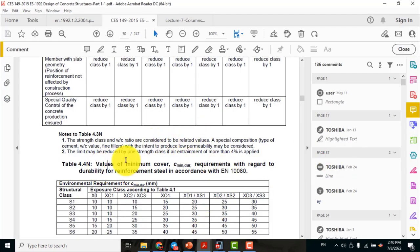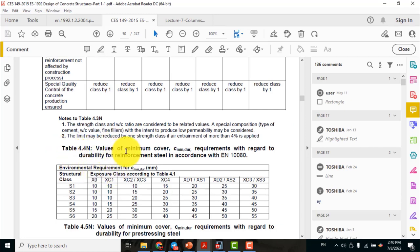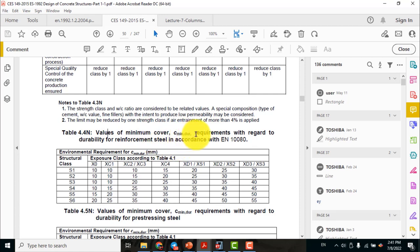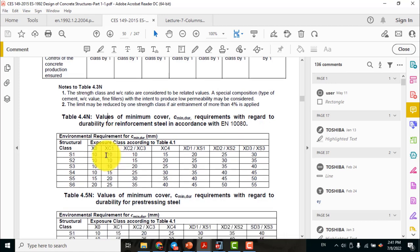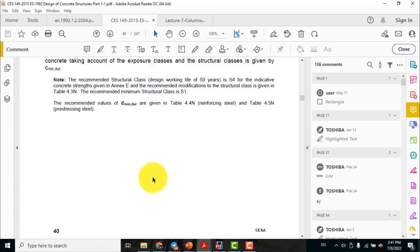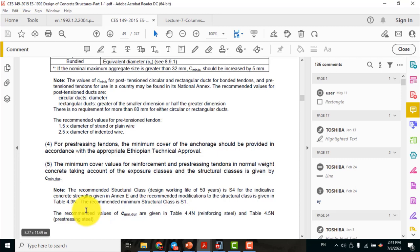Ethiopian Standard EN 1992 table 4.4N, values of minimum cover C minimum for durability requirement with regard to durability for reinforcement steel. Here we have to calculate the structural class. Exposure class is already XC1. The recommended structural class for 50 years design life is S4.